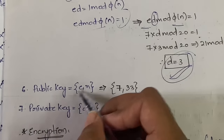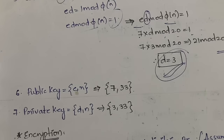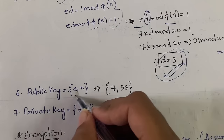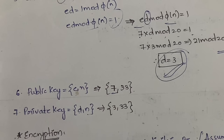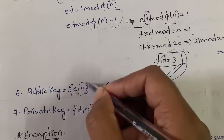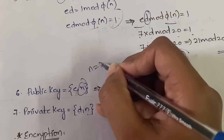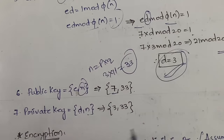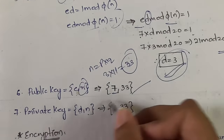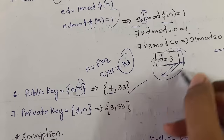Now we generate the public key and private key since this is asymmetric key cryptography. The public key is (e, n) and the private key is (d, n). The value of e is 7 and n = p × q = 3 × 11 = 33, so the public key is (7, 33). We found d = 3, so the private key is (3, 33).